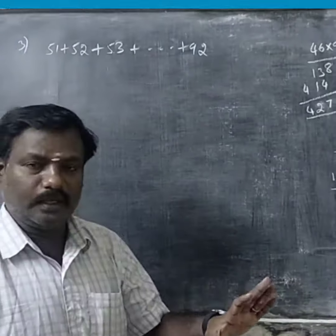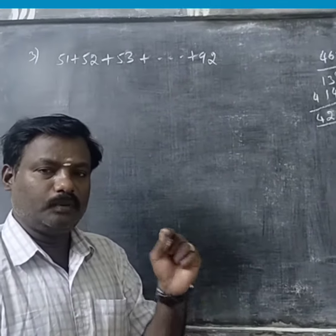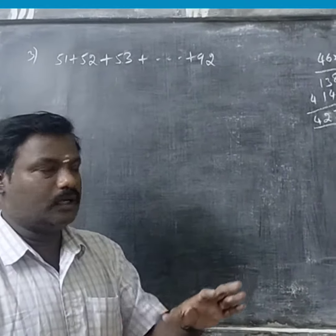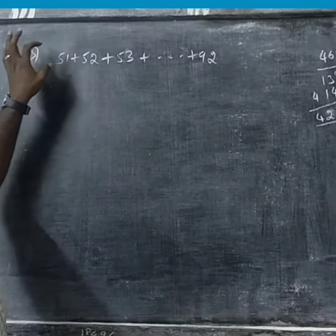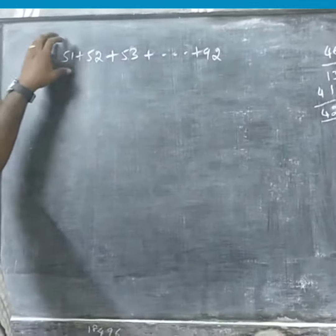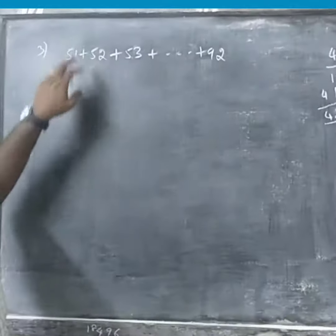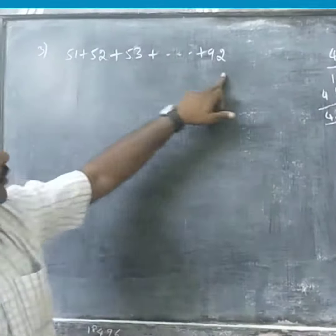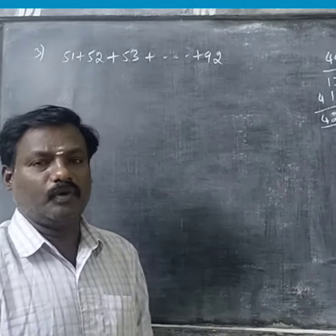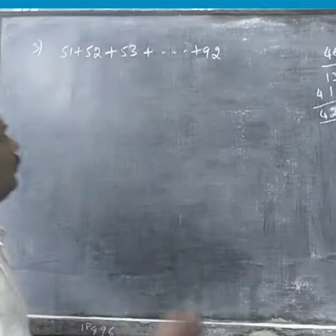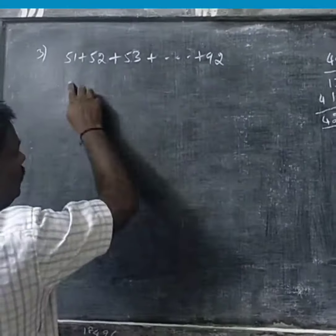I will tell you about 1 to n. 1 plus 2 plus 3 — we will start. I will tell you about 51. If you have a formula, you have to take the formula. If you apply this formula, then you will apply this formula.